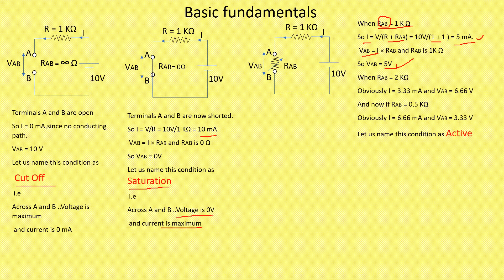If I take RAB equal to 2 kilo ohm and calculate the value of I and VAB, I will get I as 3.33 milliampere and VAB equal to 6.66 volts. If I take RAB equal to 0.5 kilo ohms, I will get I equal to 6.66 milliampere and VAB equal to 3.33 volts. You can take many values. Active mode is that mode which is in between cutoff and saturation. Cutoff has one value, saturation has one value, and active mode can have more number of values.